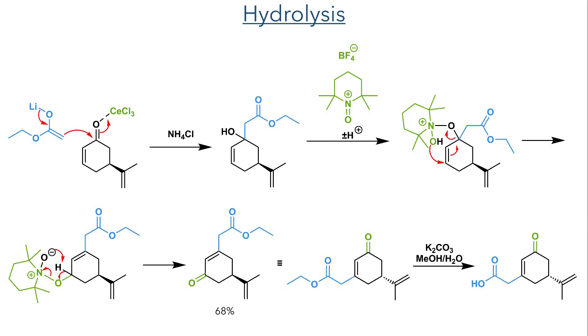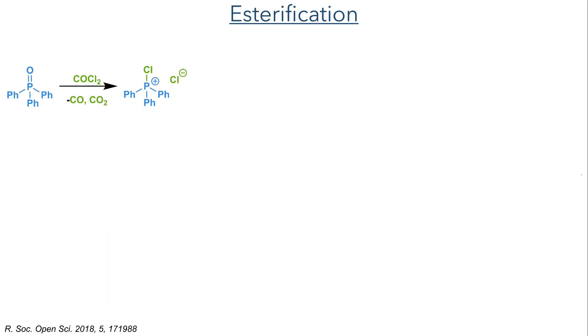The ester was then hydrolyzed using potassium carbonate and methanol to generate the target carboxylic acid. This acid could then undergo an esterification reaction with fragment 1.